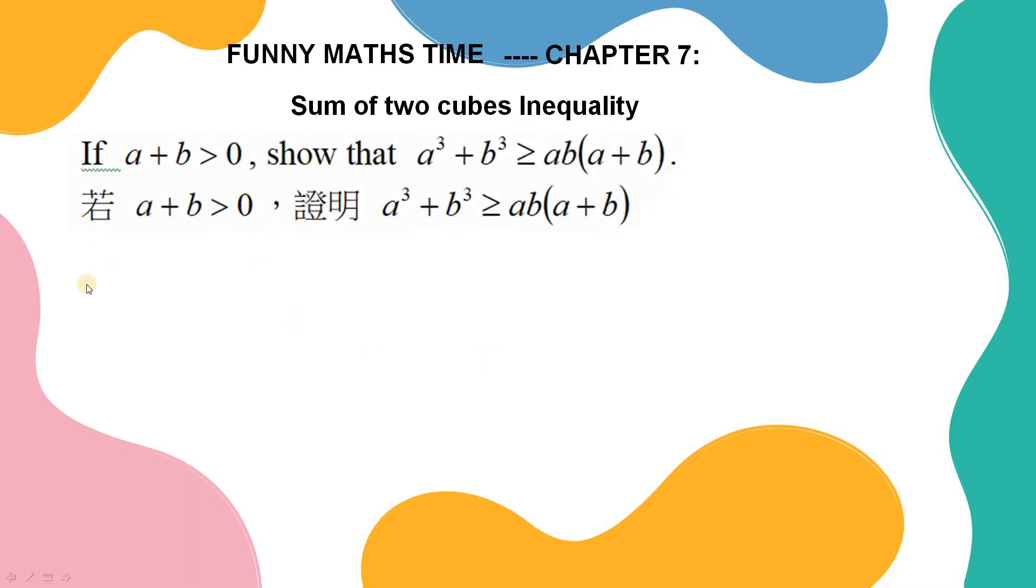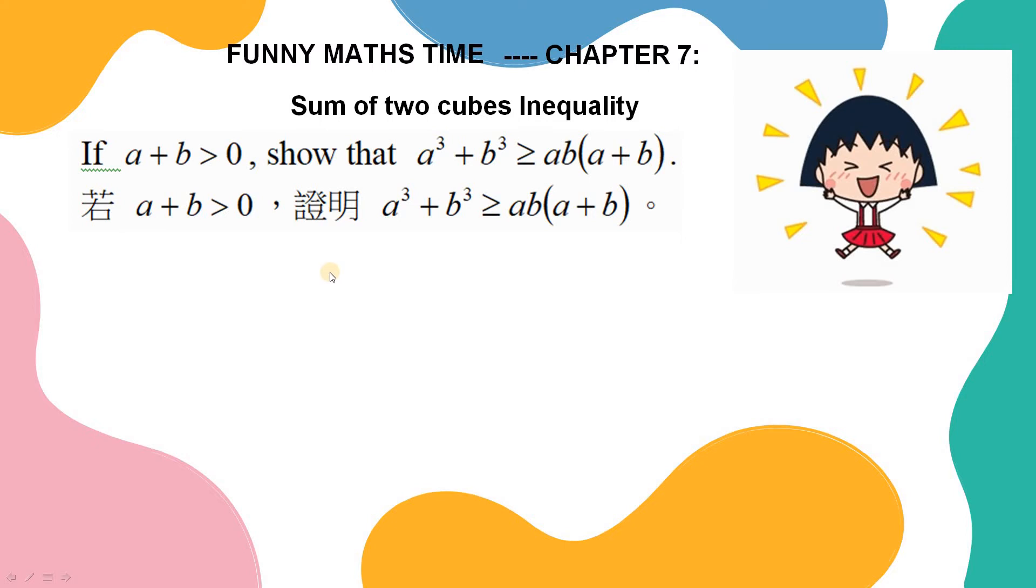Let me show you the statement. Funny Maths, Chapter 7, sum of two cubes inequality. The statement says that if a plus b is greater than zero, then a cube plus b cube is greater or equal to a times b times a plus b. Wow. So funny.